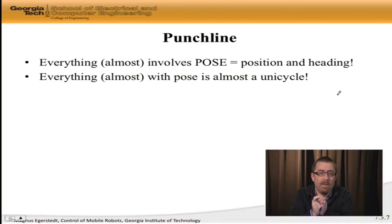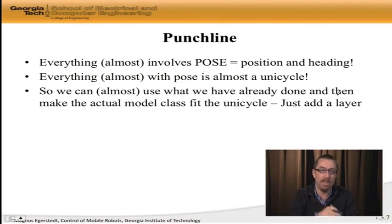If you ignore the dynamics, the actual dynamics, and say, at a certain high level of abstraction, we already know how we should think about this. The unicycle. So, almost everything involves a pose. And almost everything with pose is almost a unicycle. The point here is that whenever you start dealing with position and heading, the unicycle model is applicable, maybe not perfectly, but fairly well. This model is still very, very rich.